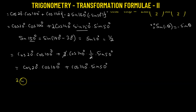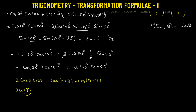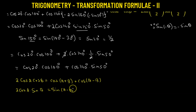If we have 2 times the product of two cosine functions — 2 cosA times cosB — they transform as cosine(A + B) plus cosine(A − B). And if we have 2 times cosA times sinB, we get sine(A + B) minus sine(A − B), which is a difference of two sine functions.